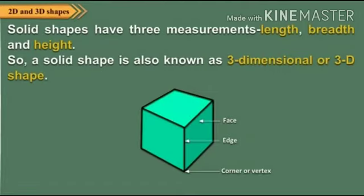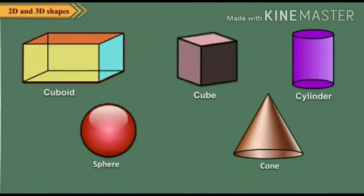Some of the shapes of solids are: cuboid, cube, cylinder, sphere, and cone. These are some of the shapes of solid figures.